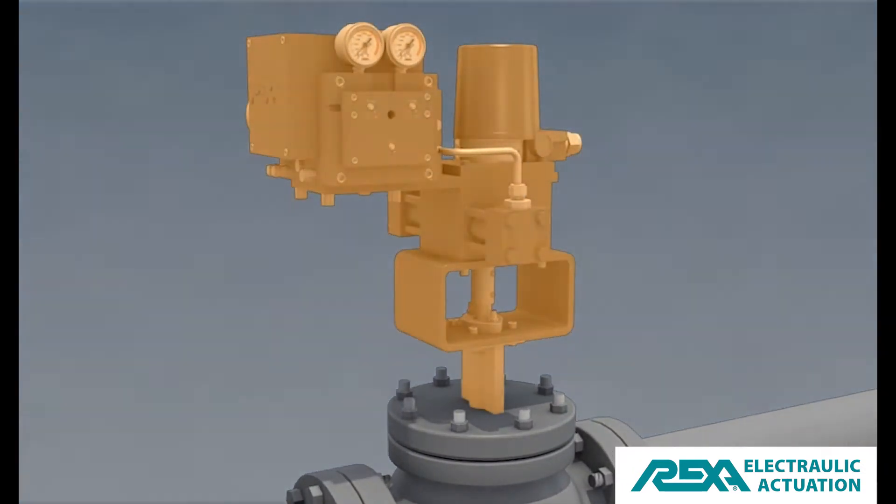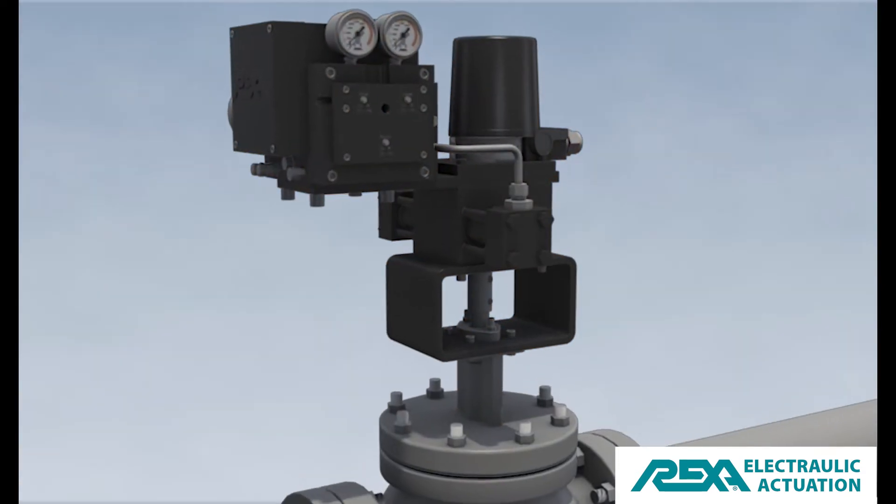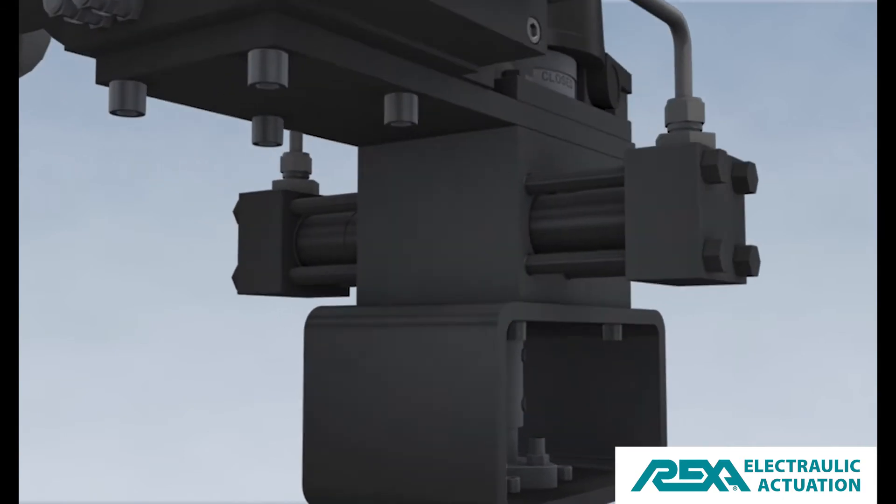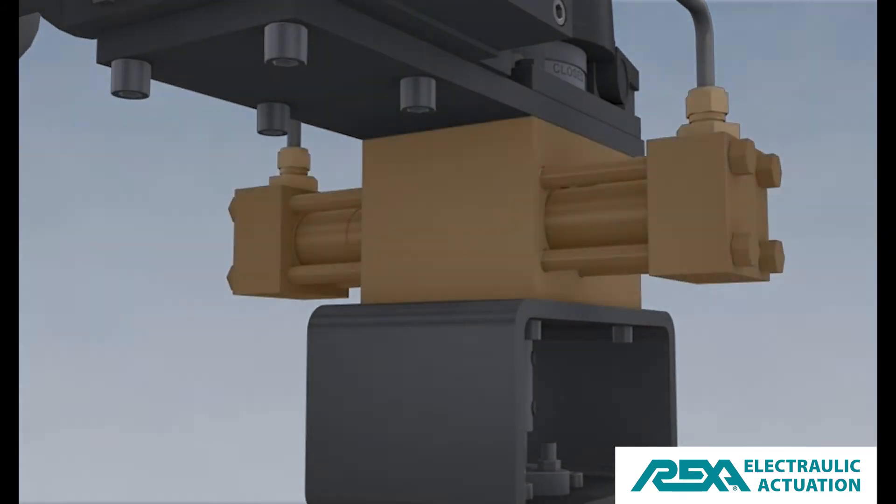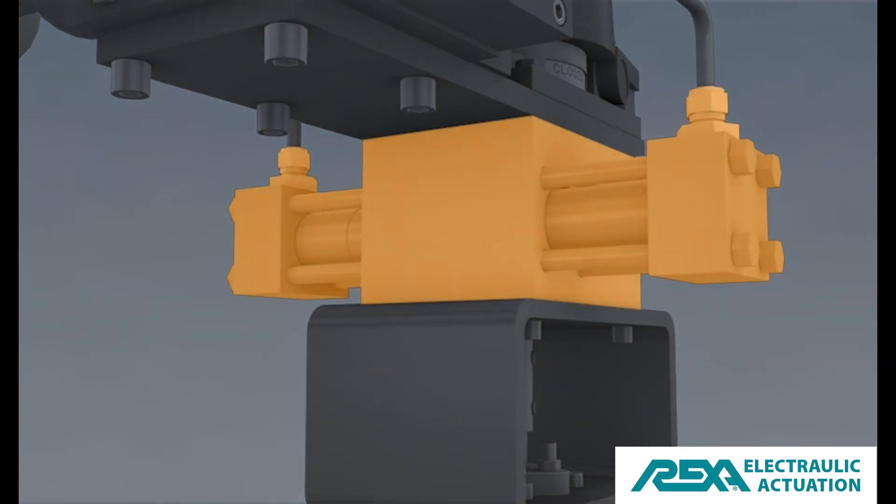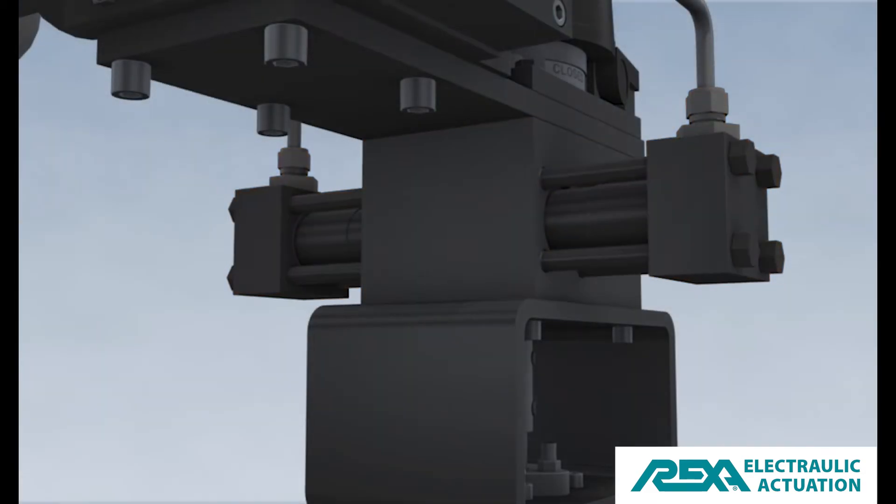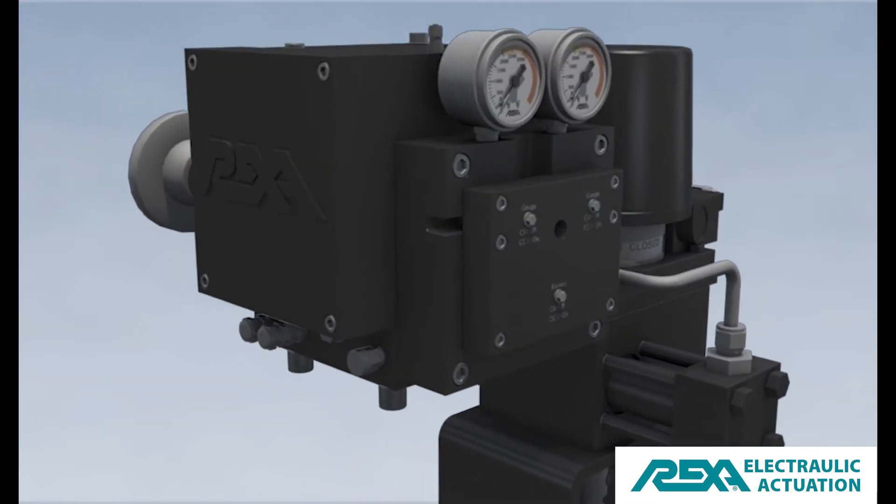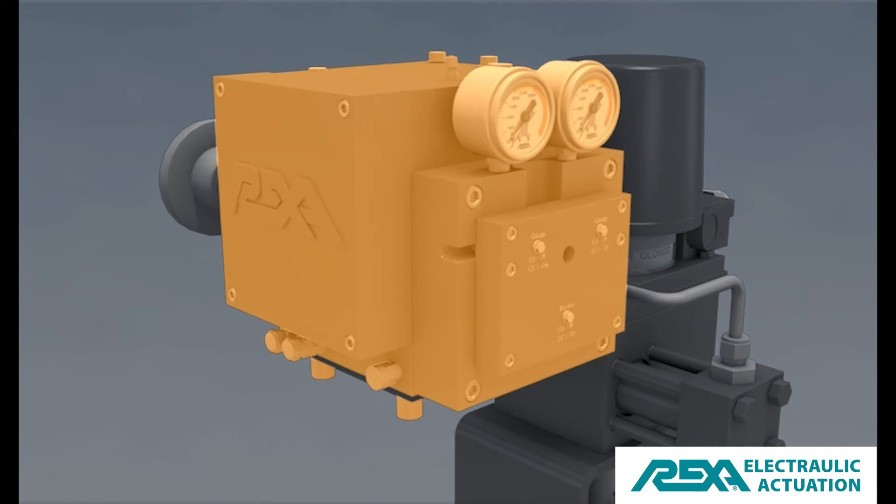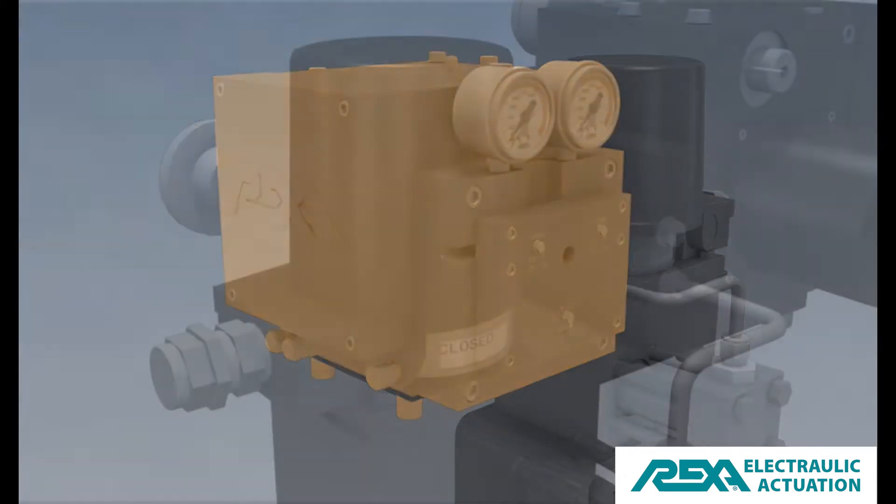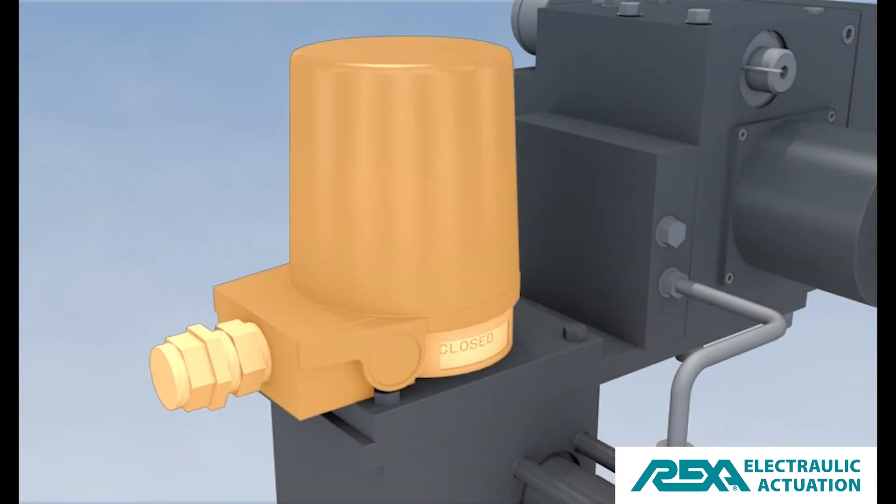The REXA actuator is a closed-loop hydraulic system. It consists of the hydraulic cylinder, the power module, and the feedback module.